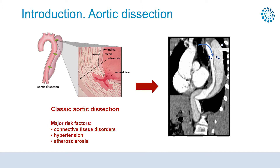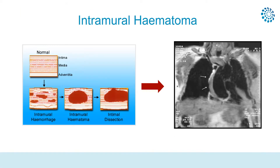The major risk factors for aortic dissection are genetic connective tissue disorders, arterial hypertension, and atherosclerosis.